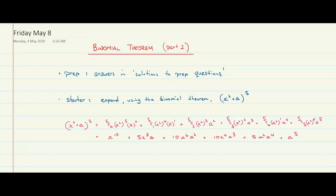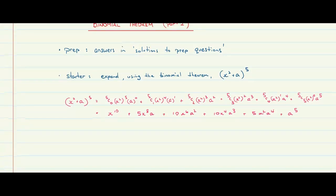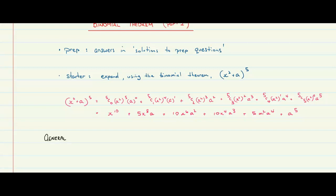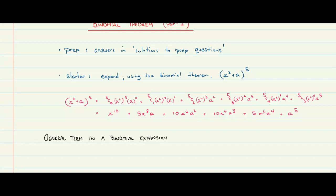We're using the binomial theorem, but there are lots of different types of nuanced questions and different angles. I'd like to tackle some of those examples before letting you loose on the exercises. But firstly, I want us to explore, or arrive at, the general term in a binomial expansion. It's going to be really helpful for us to identify particular terms, because we're going to move away from full expansions and start targeting particular terms.